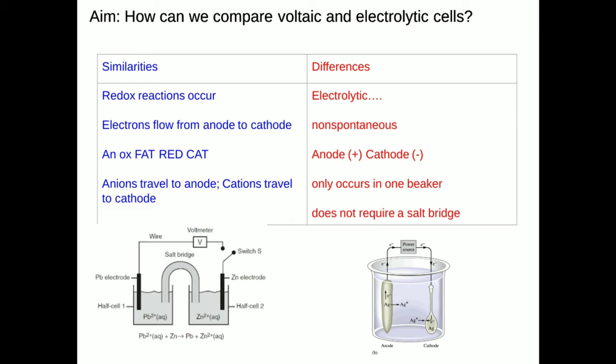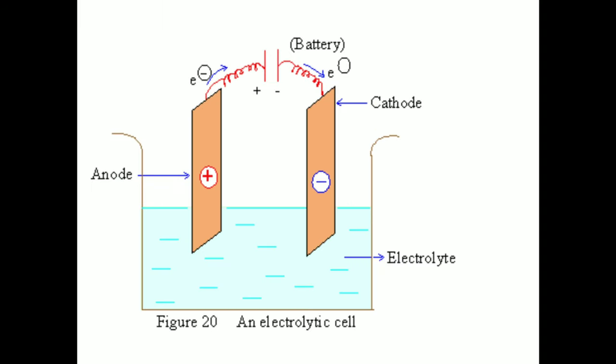The redox reaction of an electrolytic cell is non-spontaneous. The charge of the electrodes is switched. We only have one beaker, and there is no salt bridge, but instead there's typically a battery. Looking at this cell, let's talk about how we can describe how it works and label all the parts.